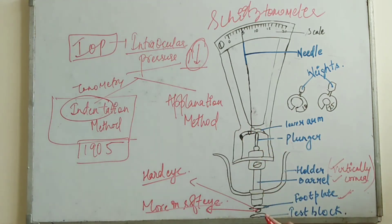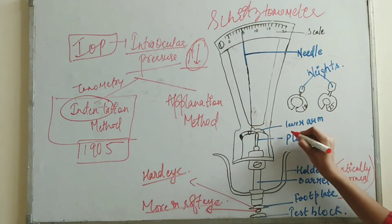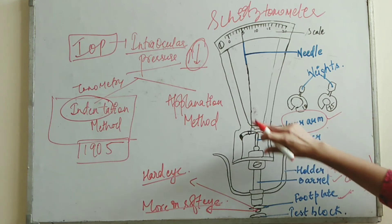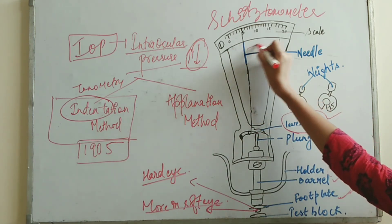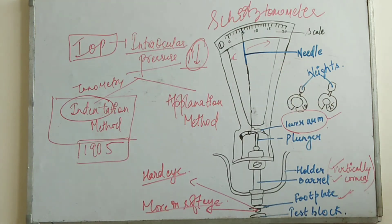It has a plunger also. This plunger is moved with the indenting. After the indenting of the foot plate, this plunger will move and that plunger will move the lever arm. This lever arm moves the needle here or there, this side or that side, depending on the hard eye or soft eye.